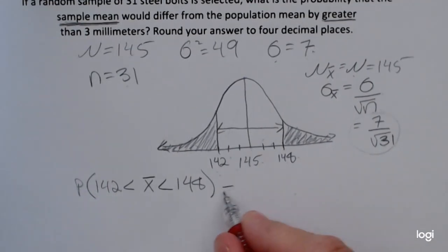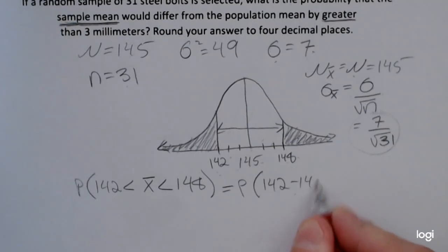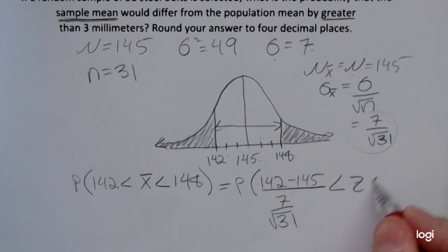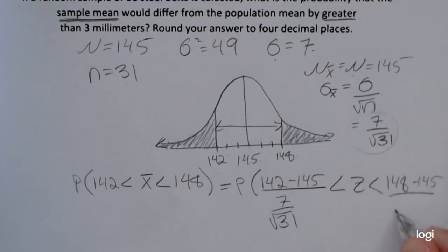Again, if you wanted to use your z-table, you'd have to convert both endpoints of that interval to z-scores first, and then you could go ahead and jump over to the z-table.